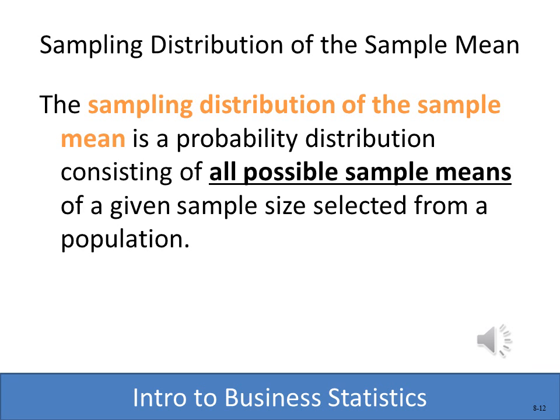We've talked about frequency distributions and probability distributions — now we're talking about the sampling distribution of the sample mean. The sampling distribution of the sample mean is a probability distribution consisting of all possible sample means you could get. This can become very large with a big population and large sample size, but it encompasses every possible sample mean.